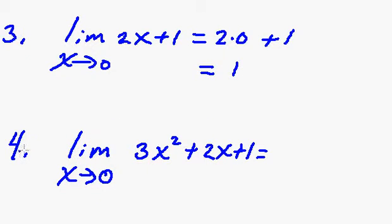For number four, we just plug 0 directly in. So we have 3 times 0 squared plus 2 times 0 plus 1, so that's easy enough. That is just 1.